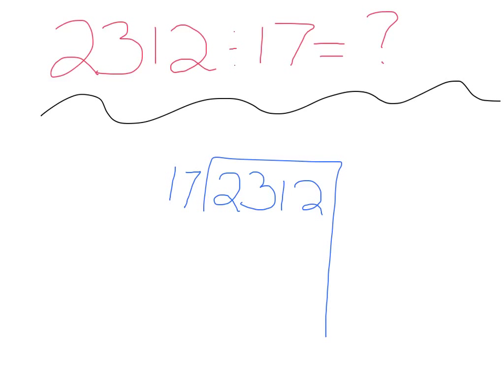First, you have to figure out how many 17s are in 2,312. There are at least 100, which is 1,700. And the difference between those two numbers would be 612.